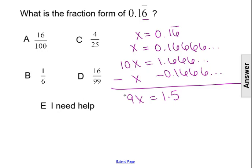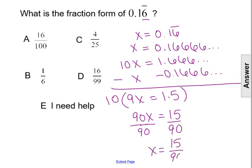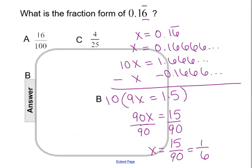We can now solve for x by first multiplying both sides of the equation by 10. That will give us 90x equals 15. We'll then divide both sides by 90, which gives us x equals 15 over 90, which can reduce to 1 sixth. So the fraction form of 0.16 repeating is 1 sixth, making our answer choice B.